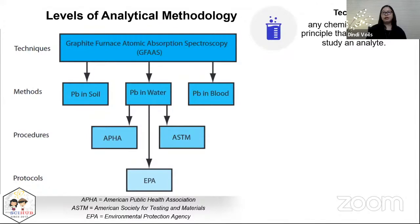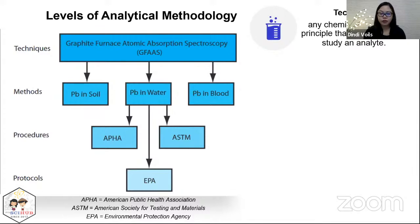But what is a technique? It is any chemical or physical principle that can be used to study and analyze. In spectroscopy — specifically absorption spectroscopy — it involves atomization of the sample and then absorption of light to create the signal for your spectra. The combination of both principles collectively is called spectroscopy.